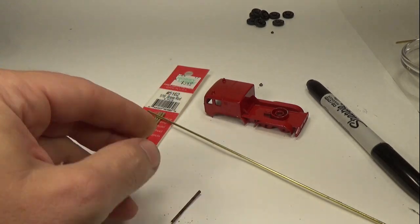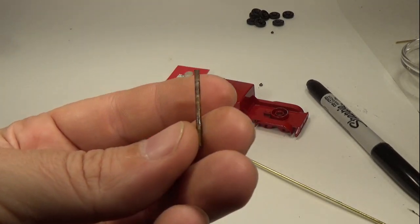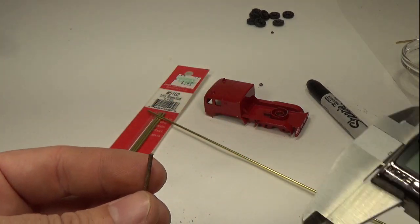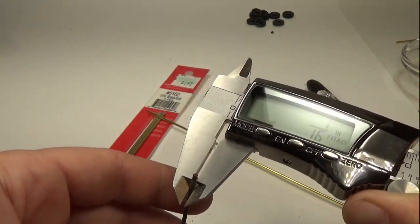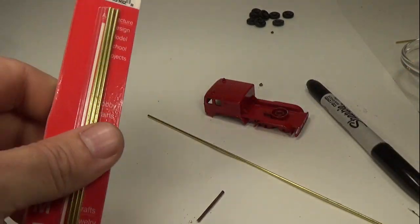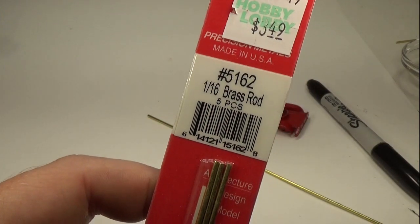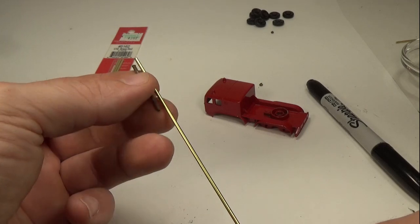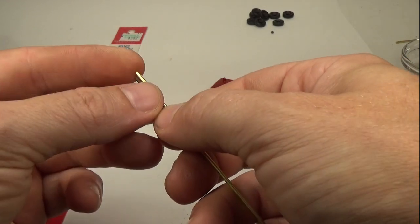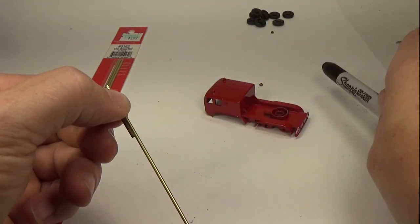With the paint dry and the rust removed I can go ahead and start making new axles for the crane. Lesney used 1/16th soft iron rod for their axles, I plan to use 1/16th brass rod for mine. I'm using brass because it's much easier to shape, but what I'm doing can also be done with mild steel. To get the rough length I'll use one of the original axles as a template.